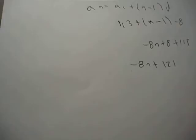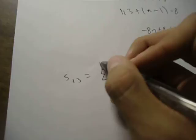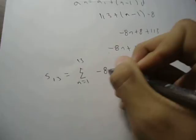When we're finding the partial sum, we want to write everything out in summation notation. So, s_13, because it's the 13th hour. And then that sigma, from n equals 1 to 13. Then we write the formula, negative 8n plus 121.